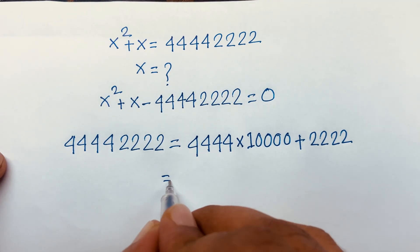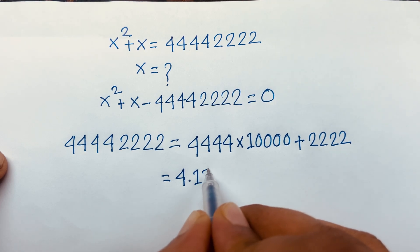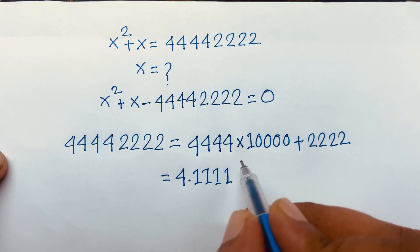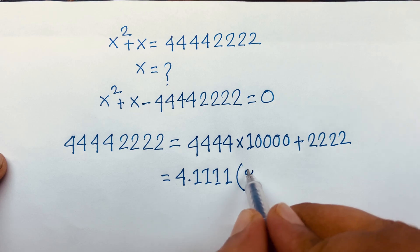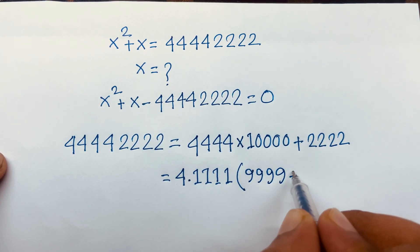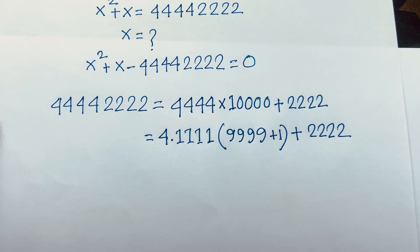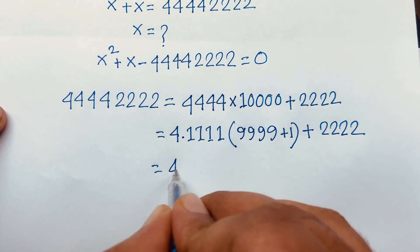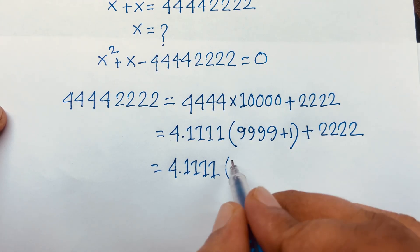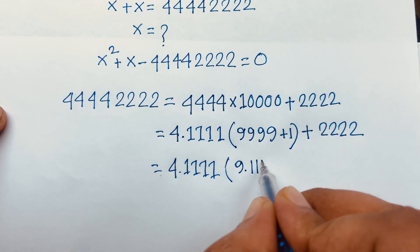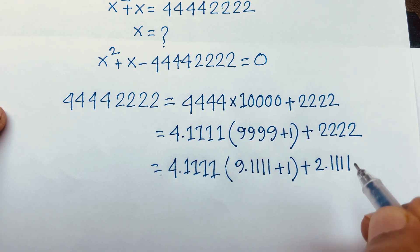Here 4444 will be 4 times 1111, and 10000 will be 9999 plus 1. And 22222 will be 4 times 11111. Then 9999 will be 9 times 1111 plus 1, and it will be 2 times 1111.